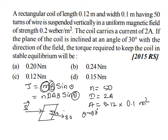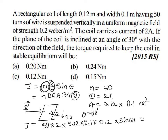So θ = 60 degrees. Substituting the values: τ = 50 × 2 × 0.12 × 0.1 × 0.2 × sin 60°. Sin 60° = √3/2.